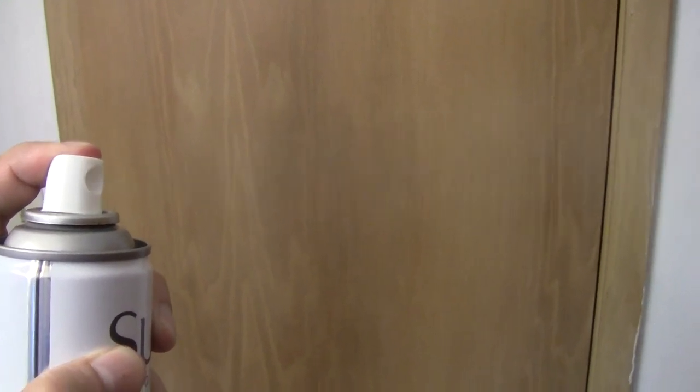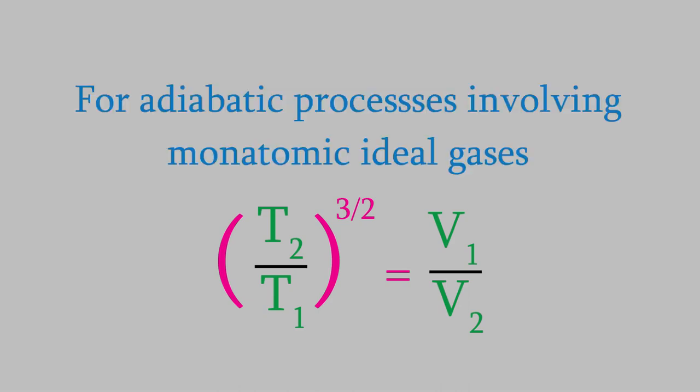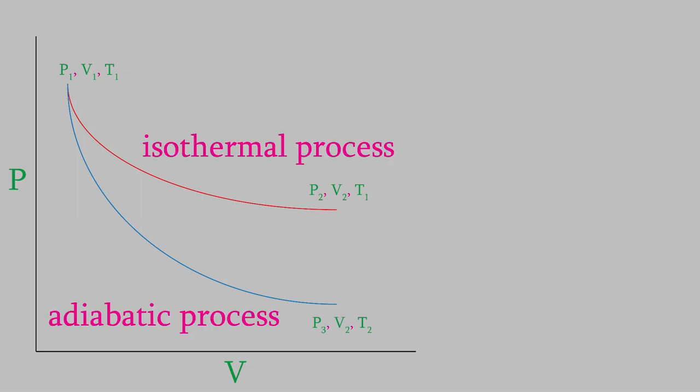However, remember we can't use that equation for the gas in a deodorant can, because that expression is only correct for monatomic ideal gases, and the gas in deodorant isn't monatomic. Anyway, let's get back to the diagram. We now have expressions for heat, work, energy, and enthalpy for an isothermal process and for an adiabatic process.